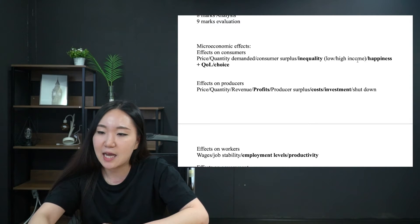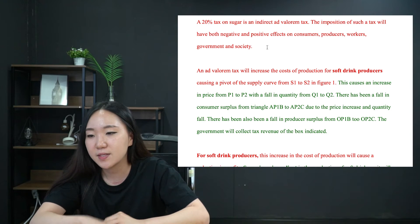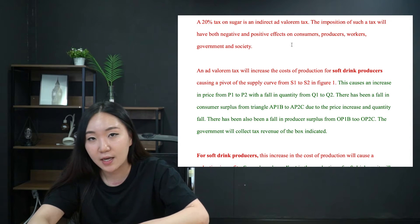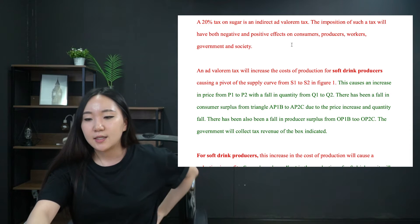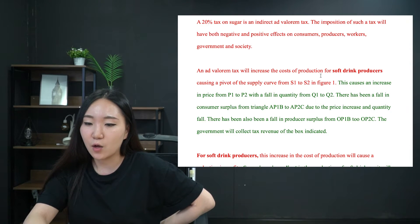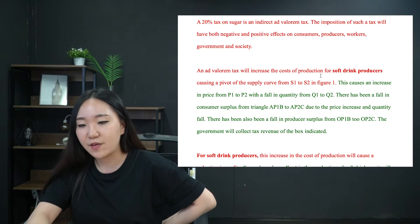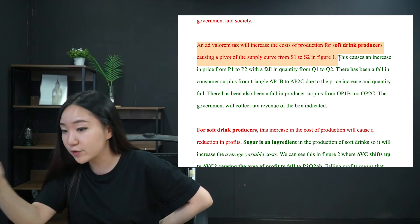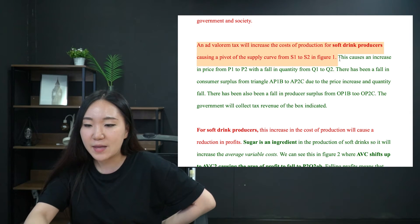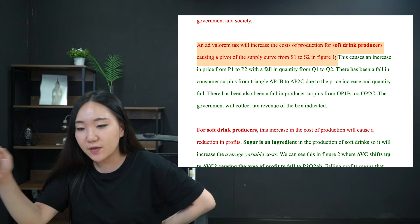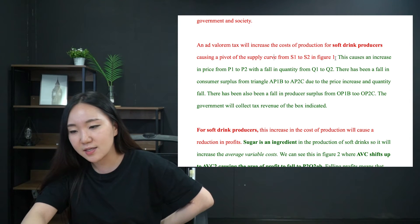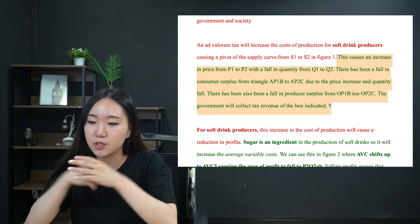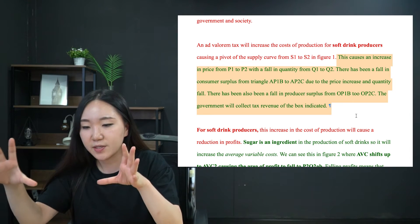Introduction: 'A 20% tax is an indirect ad valorem tax.' That's red — knowledge definition. 'The imposition of such a tax will have both negative and positive effects on consumers, producers, workers, government, and society.' It's a somewhat obvious sentence, but I like to show I have a structure and will specifically focus on microeconomic effects. An ad valorem tax will increase the cost of production for soft drink producers, causing a pivot of the supply curve from S1 to S2 in figure one. Identifying the effect is knowledge; the diagram itself is analysis. This causes an increase in price from P1 to P2, Q1 to Q2 — consumer surplus falls, producer surplus falls, and there's the government tax revenue box.